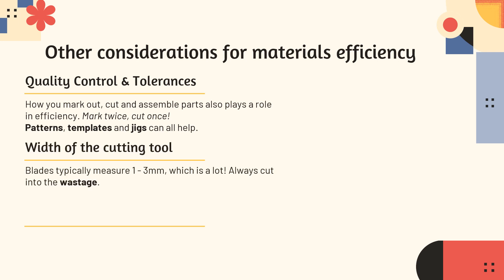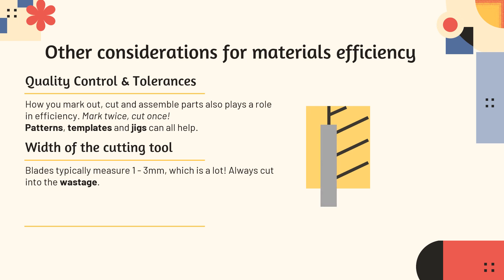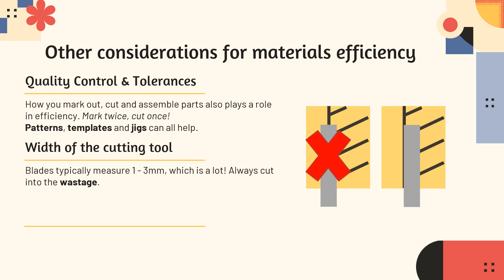Next is the width of the cutting tool. Blades typically measure between one and three millimetres, which is an awful lot. Imagine you have a piece which is only six millimetres wide — a three-millimetre blade is half of that. You have to make sure that you are always cutting into the wastage. Here's an example of a piece of MDF: I've vertically marked where I want to cut, and the diagonal lines on the right-hand side indicate the wastage — the remnant I don't want to keep. Too many children place their blade right on the line, but you can see that half of it goes into the piece itself, which isn't OK. Instead, we place the blade into the wastage — the bit that's going to be removed.